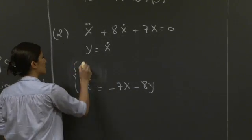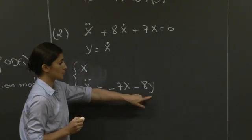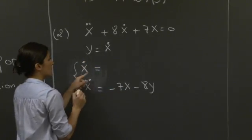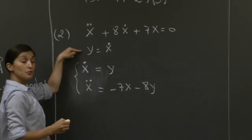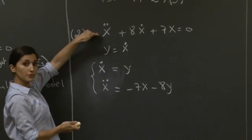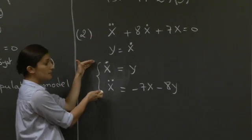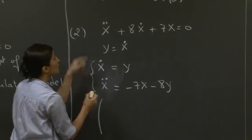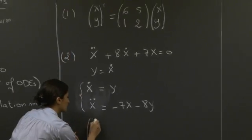Now the other equation we need is the one that tells us what this y is. So we have x dot equals y, which is the new variable that we introduced. And so we go from a second order differential equation into a system of two differential equations that we can write now in vectorial form and matrix form like we did for the first part.